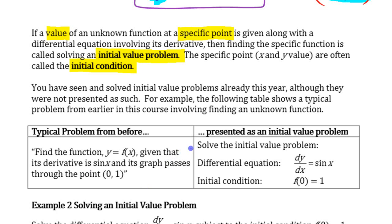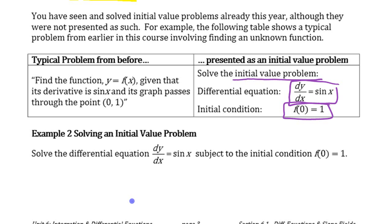So that's called an initial value problem. You've had these things before too, right? Find the function that has this as its derivative and passes through this point. You've had those before. They just haven't been called initial value problems. If it's presented as an initial value problem, here's a differential equation, here's an initial condition, it's the same as things you've already done before.